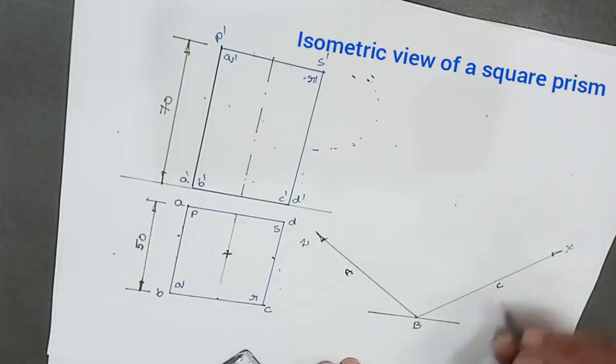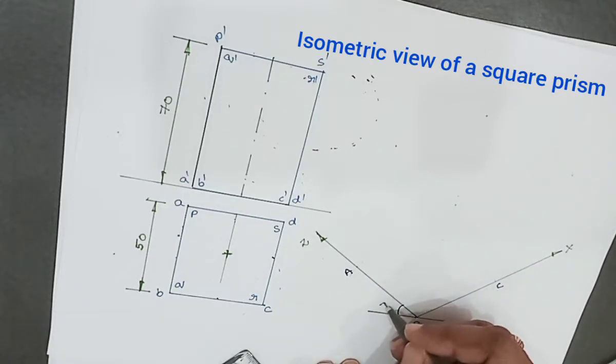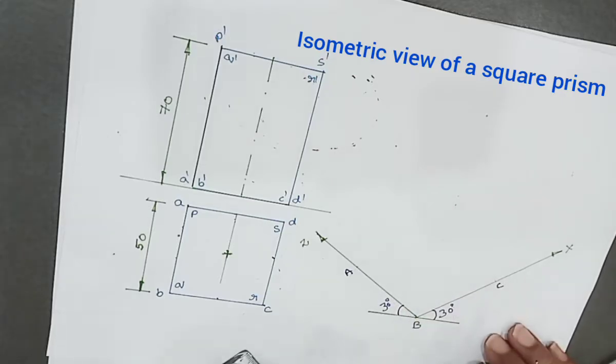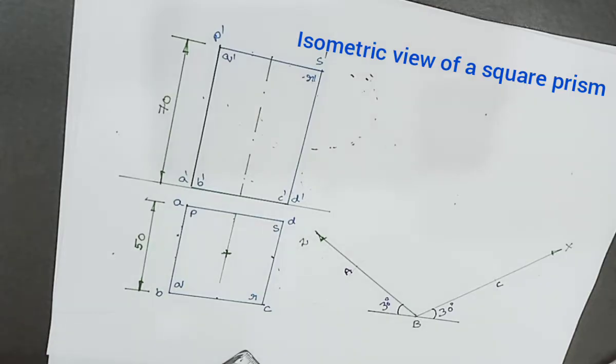Mark points A and C at 30 degrees and this one also 30 degrees. As a first step we'll draw all lines as light lines.